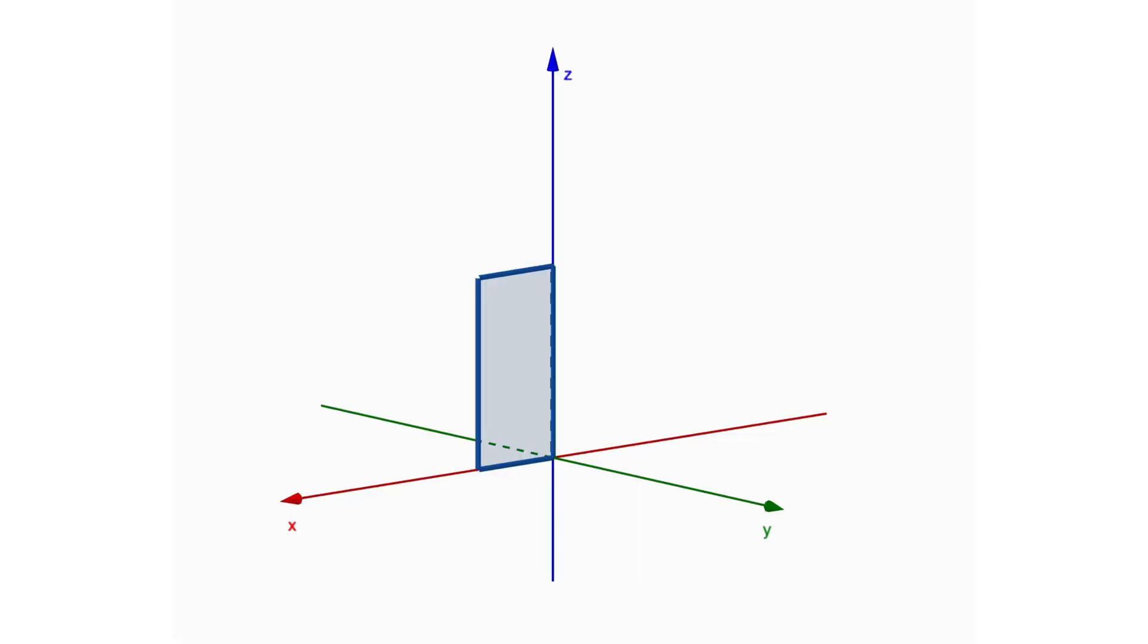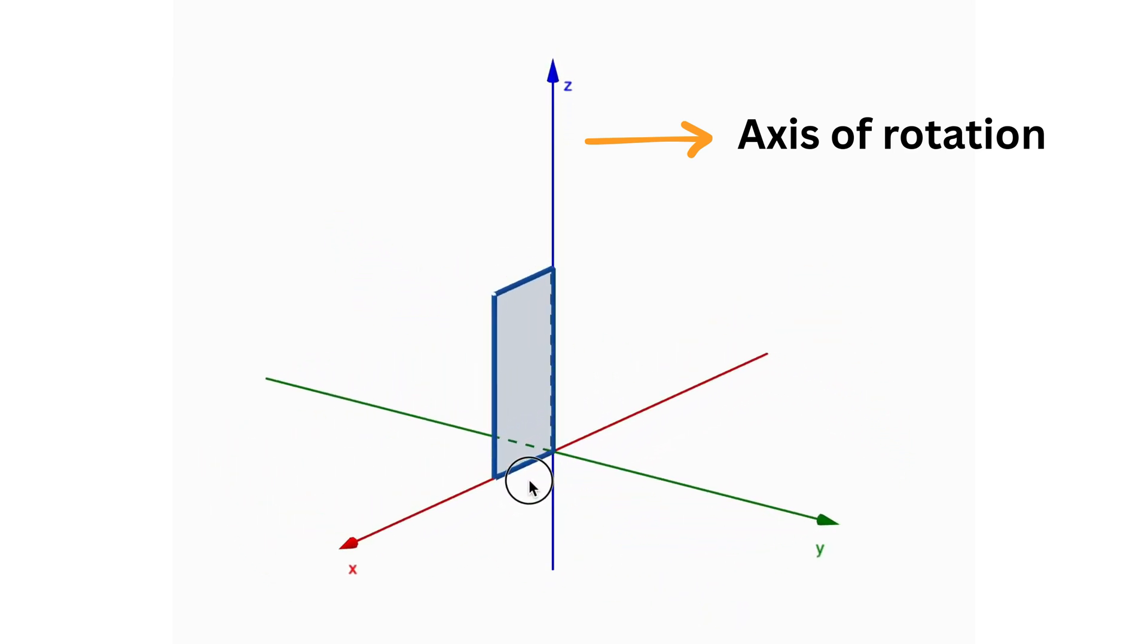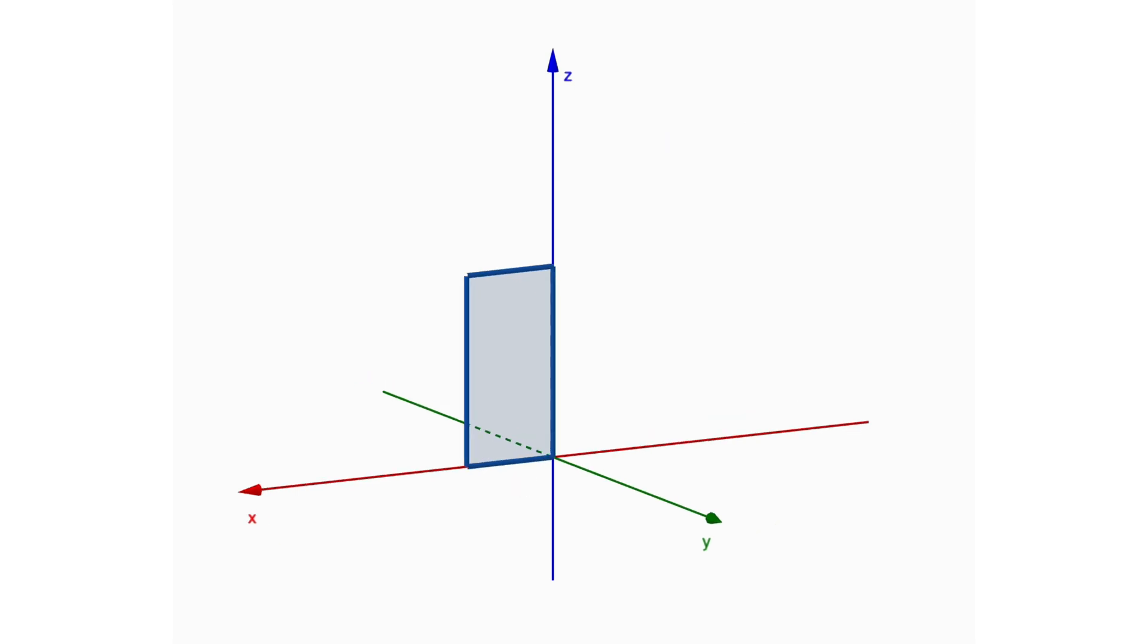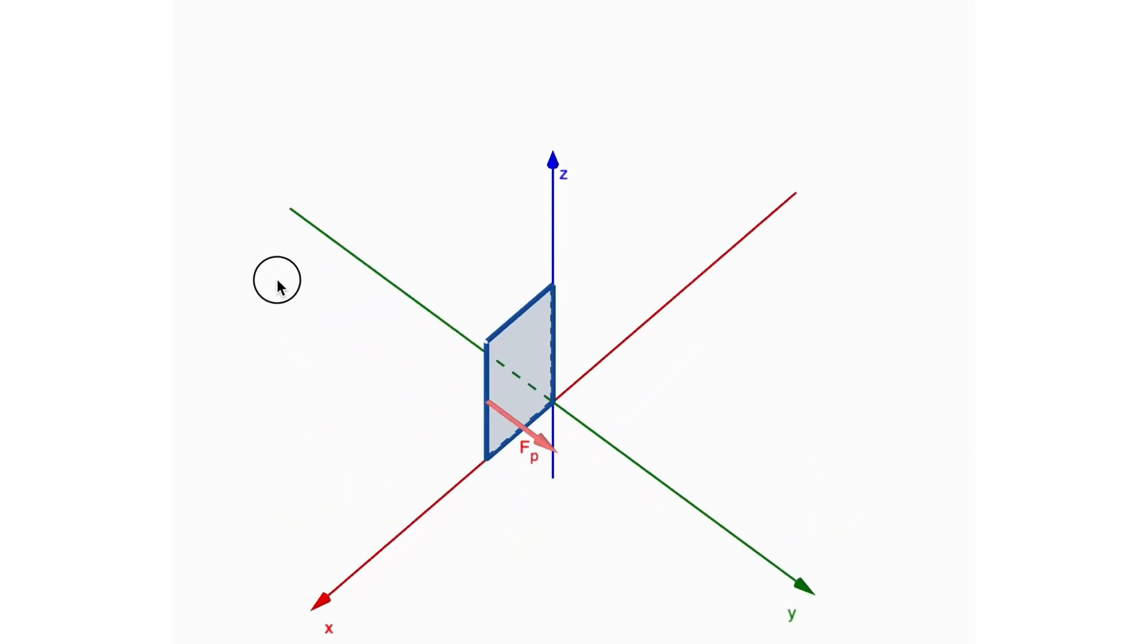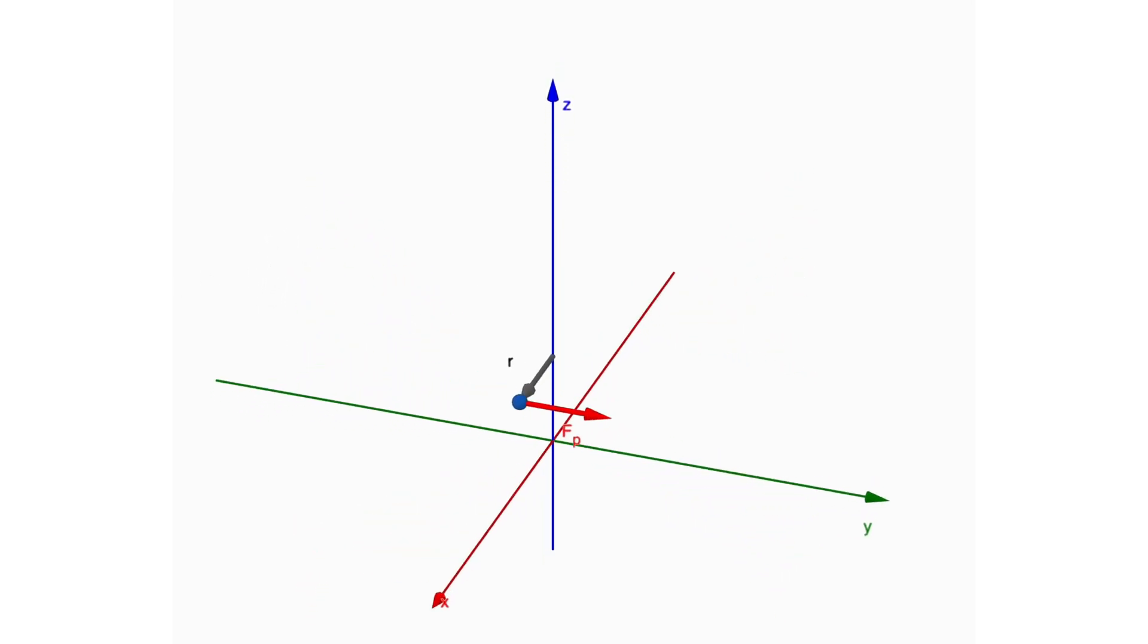Let's go back to the door example. The axis of rotation is the line where the door is attached to the wall. That's the hinge side. Assume we apply a force perpendicular to door like this at this point, which is shown using this red vector. FP means a perpendicular force. The distance from the axis of rotation to the point where the force is applied is called the position vector, which will be this vector.